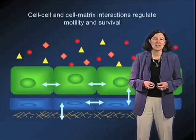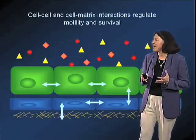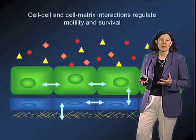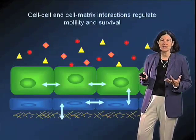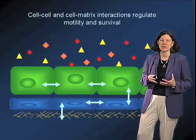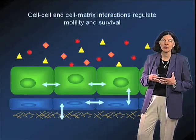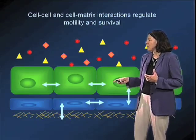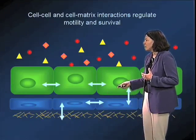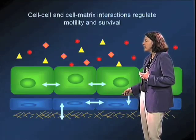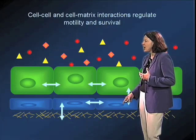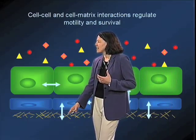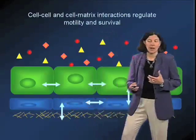As we've discussed in Part 1, cells are surrounded by other cells and extracellular matrix material and lots of soluble cues and factors that influence their behavior in really dramatic and important ways. One really important type of informational cue comes from the information that cells get from interacting with the extracellular matrix.